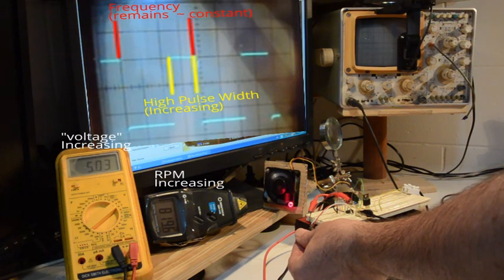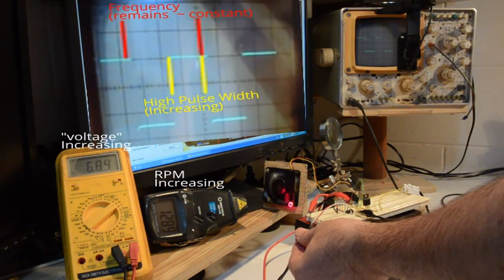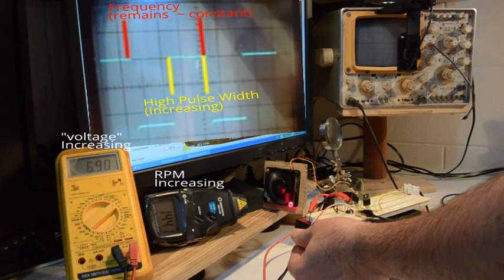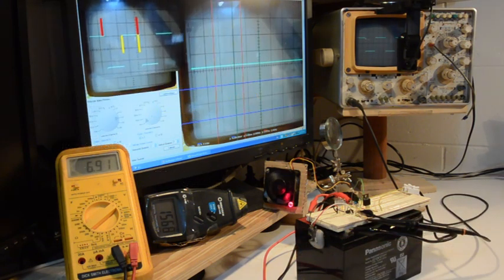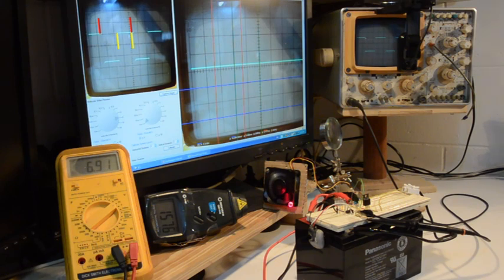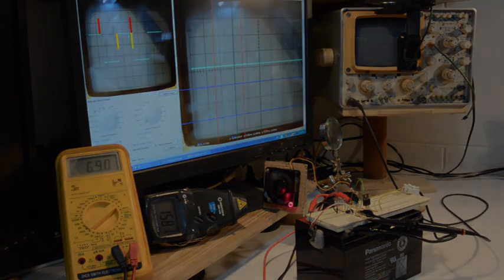However, because the full voltage, for example 12V from a 12V rated fan, is always being applied while the pulse is high, the motor will still operate just at a slower speed, whereas if you'd only applied for example 5 or 6V continuous, the motor would likely not even start.